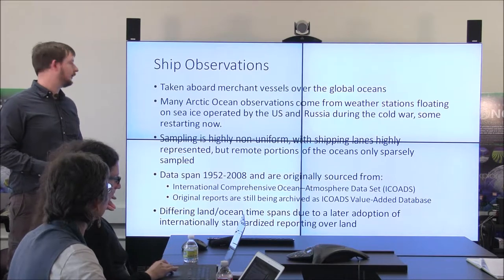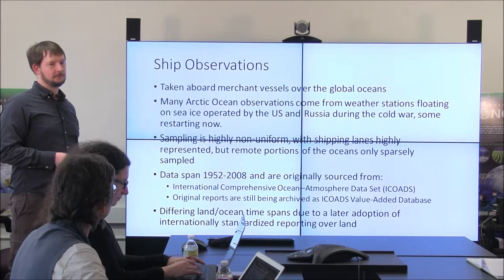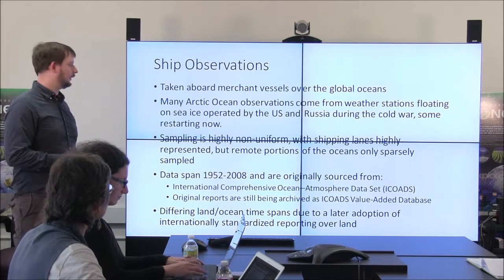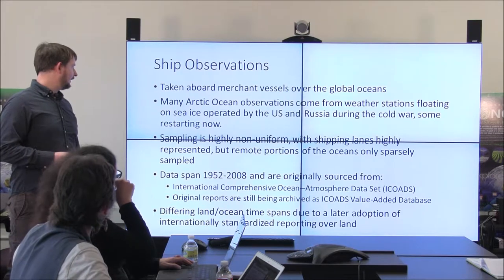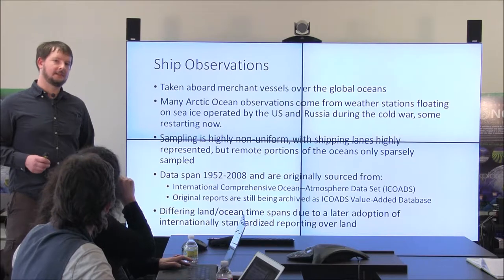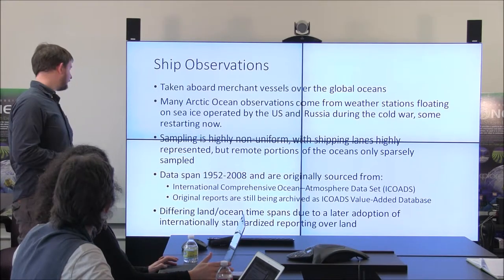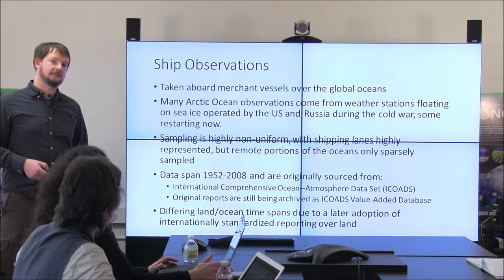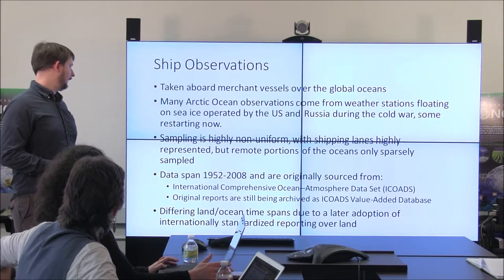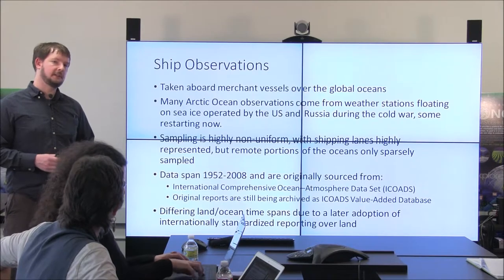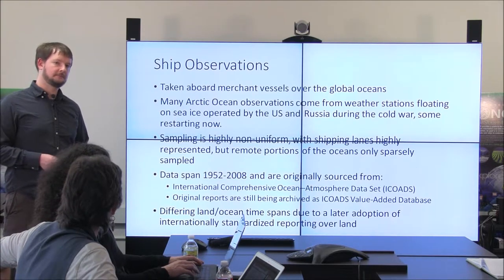Ocean observations are taken aboard mostly merchant vessels. In the Arctic, there are also observations from floating weather stations — the Russians and Americans to a lesser extent actually set up drifting sea ice weather stations that were manned during the Cold War period. They would ride the sea ice until it started to break up, get evacuated, and move to a different part of sea ice. So we have Arctic data from the 50s through at least the 90s before the Russian government broke up and shut it down. Ocean data is sourced from ICOADS, which is still archiving ship observations and continuing the dataset.